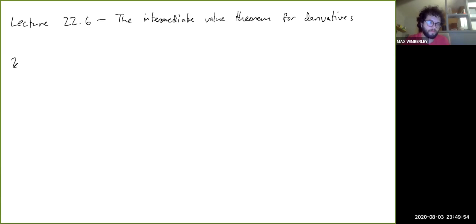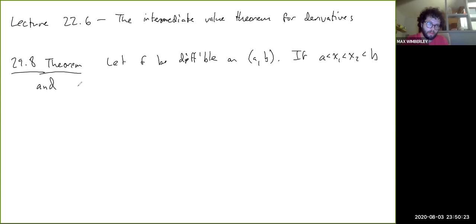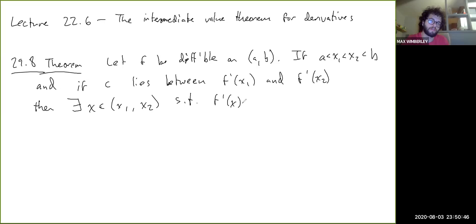Let me state the theorem. Let f be differentiable on (a,b). If a less than x₁ less than x₂ less than b, and if c lies between f'(x₁) and f'(x₂), then there exists an x in (x₁, x₂) such that f'(x) equals c.